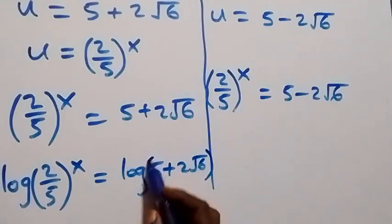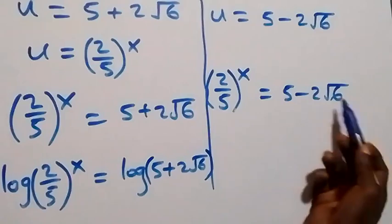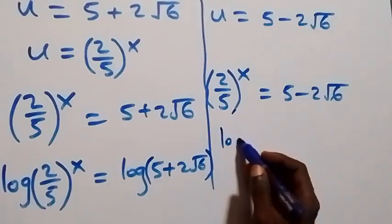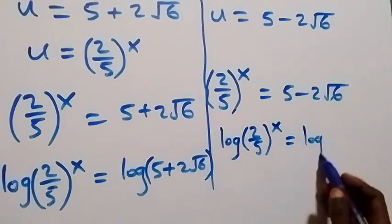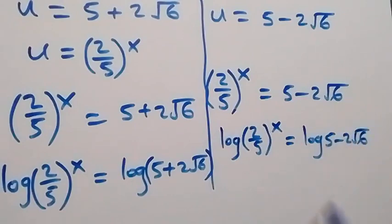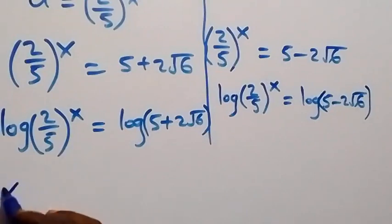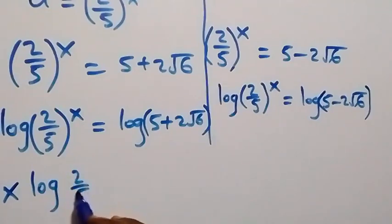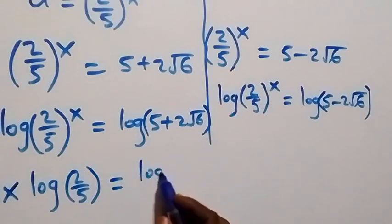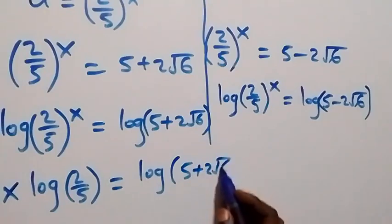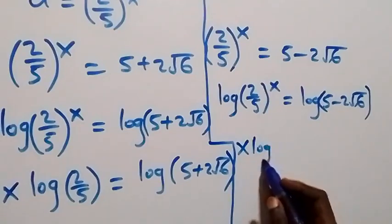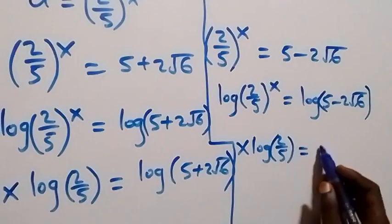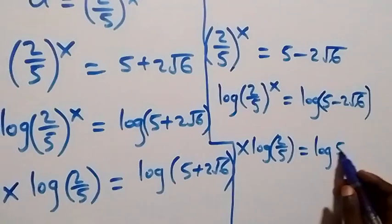Both right-hand side values are positive, so taking the log on both sides is valid. We have x times log(2 over 5) equals log(5 plus 2 root 6), and equally on the other side, x times log(2 over 5) equals log(5 minus 2 root 6).